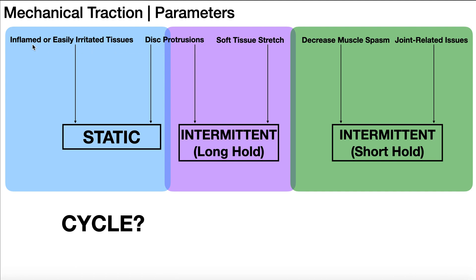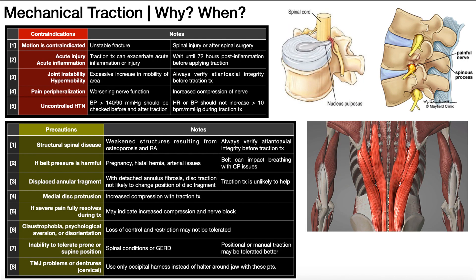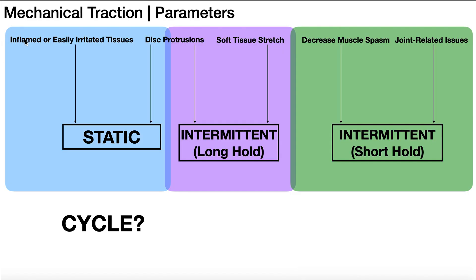The first over here on the left is inflamed or easily irritated tissues. When we say inflamed here, we're of course not talking about acute inflammation. We're not going to do traction on somebody who just had an injury to the spine, because one of the contraindications to traction is acute injury or acute inflammation. So this type of inflammation is most likely going to be subacute or more often chronic inflammation.